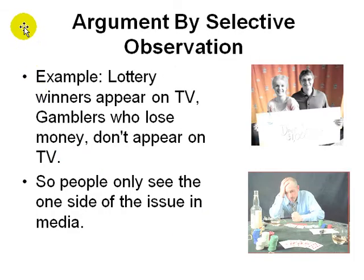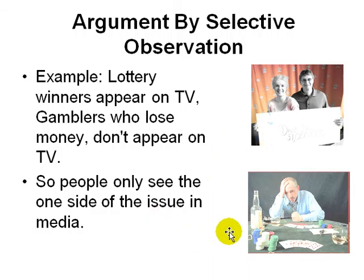A very common fallacy, especially seen in students, TV, and newspapers, is argument by selective observation. You just pick a good sample and show it, without showing the bad sample. Almost everyone does it. For example, you see lottery winners on TV but you never see people who lost money gambling. It only shows one side of the picture and doesn't show what happens to people who lose money.